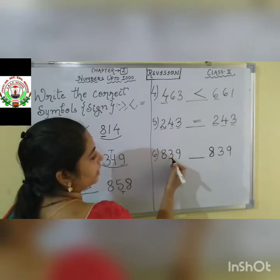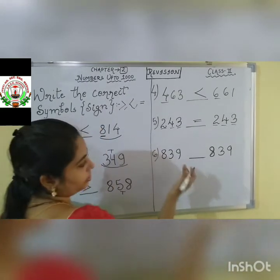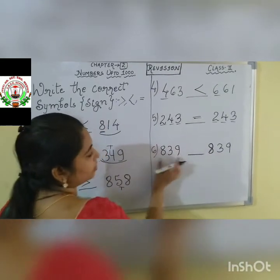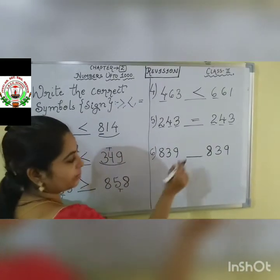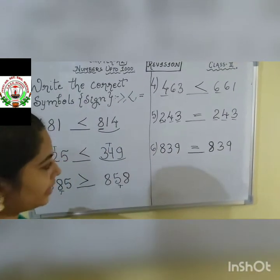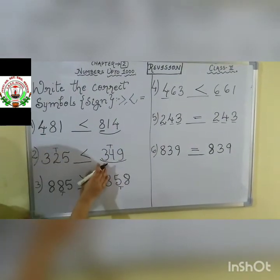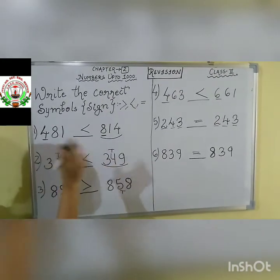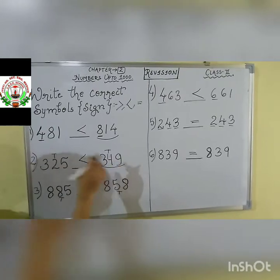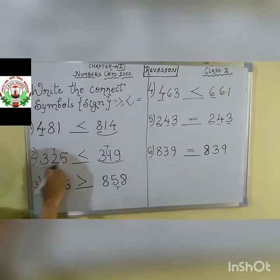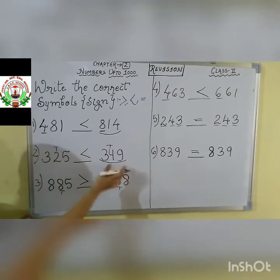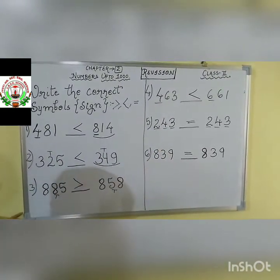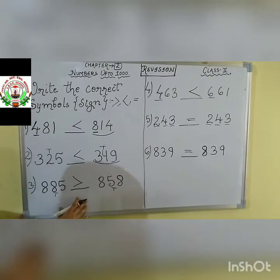Next: 839 and 839. We can see hundreds, tens, and ones place. All the places are the same, all the digits are the same. So put the equal sign. First, compare the numbers children. If the hundreds places are equal, then go to the tens place. If the tens place is also equal, then come to the ones place and see which one is greater. If all the places have the same number, then put an equal mark. Practice these types of questions more.